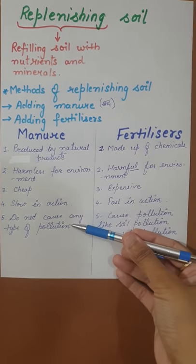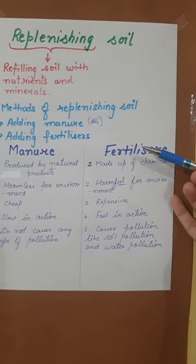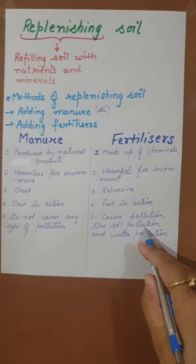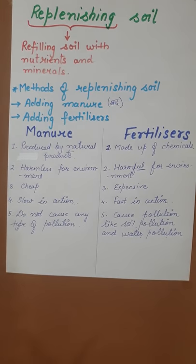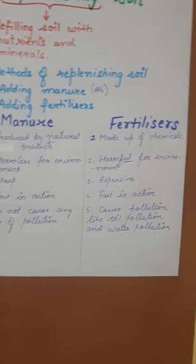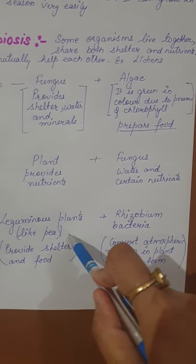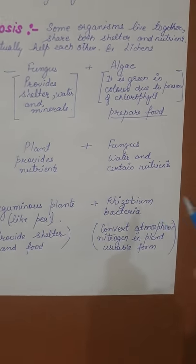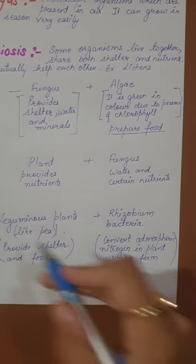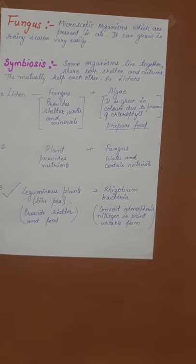Manures do not cause any type of environmental pollution. But fertilizers cause pollution — that is soil pollution and water pollution. The best method, however, is sowing leguminous plants, as they grow naturally and fix a very good amount of nitrogen into the soil.